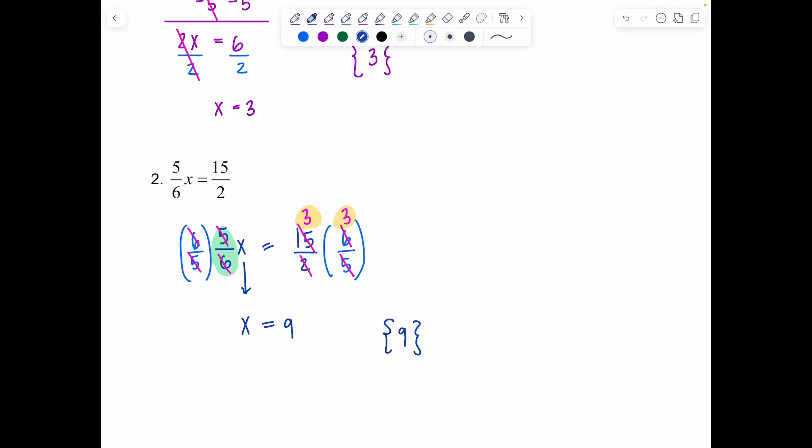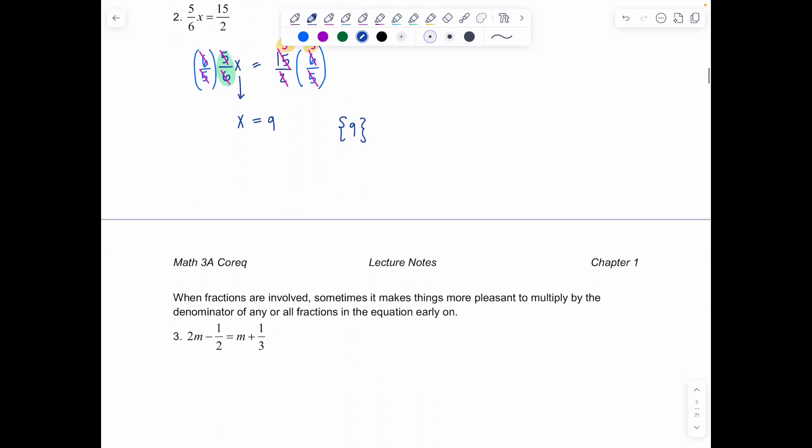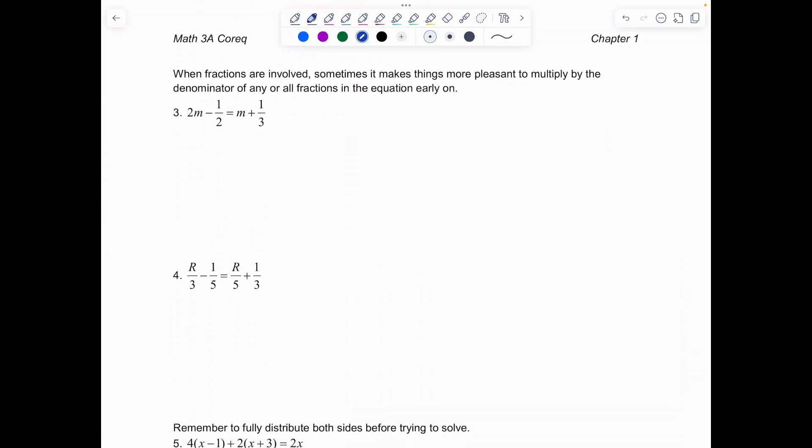Now this one was not so wild because we only had one fraction on each side. Sometimes when you have multiple fractions in the equation it's more pleasant if you multiply through by the denominator of any or all of the fractions early on. So that you can just clear them out and be fraction free. So what do we mean? Well looking here I have two fractions and then two terms that don't have them. If you just want to get rid of all your fractions you could multiply the entire equation through by 2 and by 3. So 2 times 3 is 6. I'm going to multiply the whole equation through by 6. If you need to remind yourself it's 6 over 1 technically right? Okay so that 6 will distribute. So we have 2m times 6 minus 1 half times 6 over 1 equals m times 6 plus 1 third times 6 over 1.